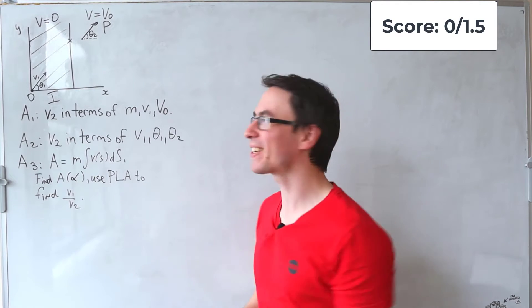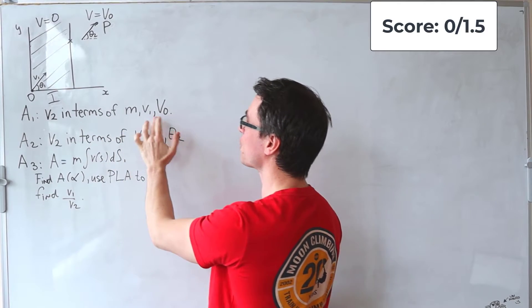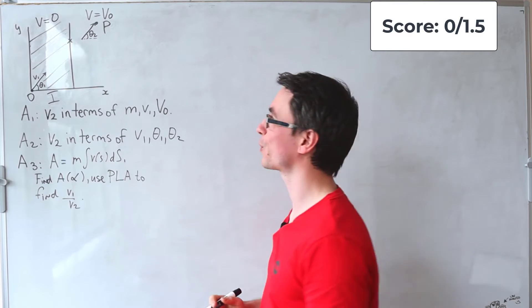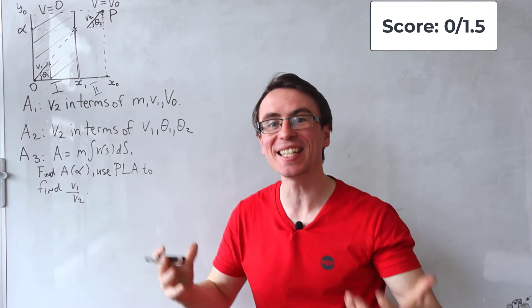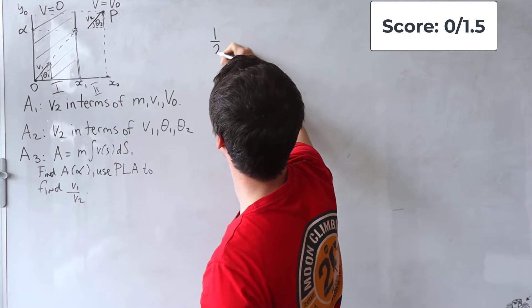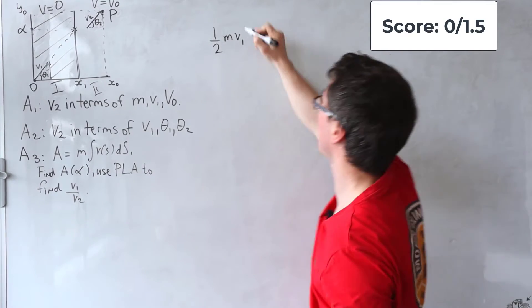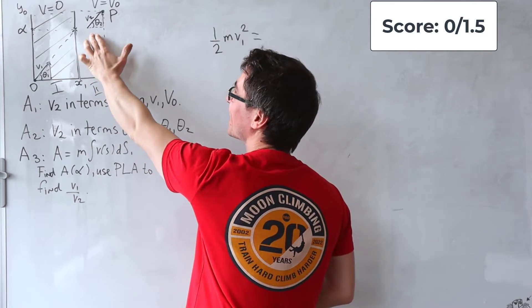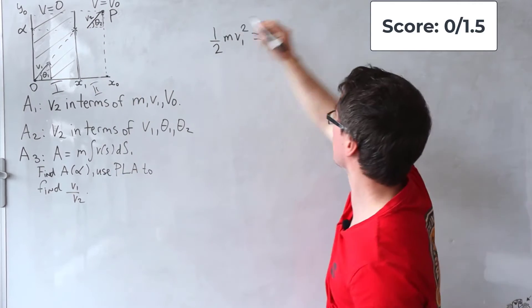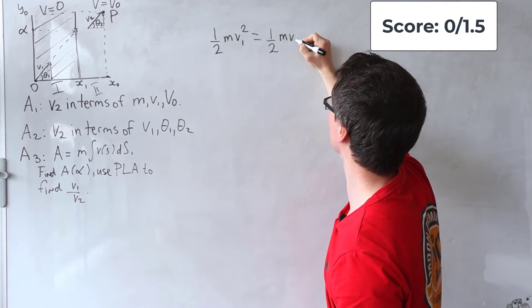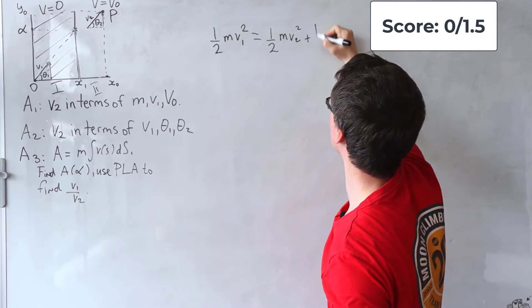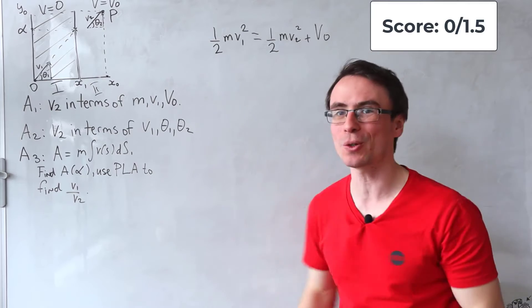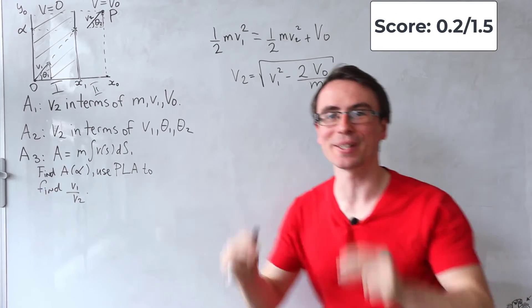The first part of the question is to express V2 in terms of M, V1 and the potential. Okay, so this question does not start too difficult and we can just use conservation of energy. In the first region, the particle has kinetic energy only. So in region 1, we can write that the total energy is equal to a half M, V1 squared. In the second region, the particle has kinetic energy and potential energy. The kinetic energy will be given by half M, V2 squared plus the potential, which is V0. And we can directly rearrange this for V2. And there it is, 0.2 points complete.